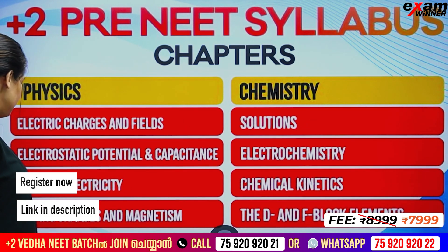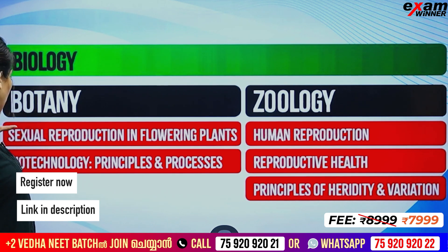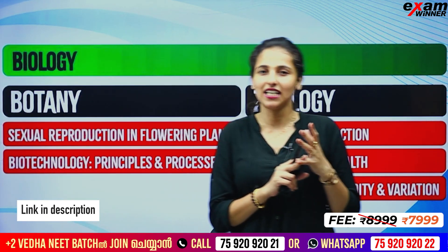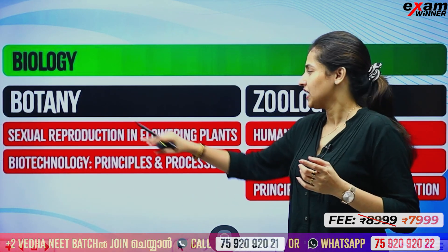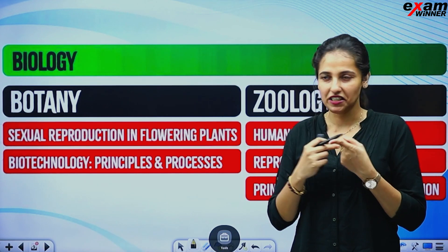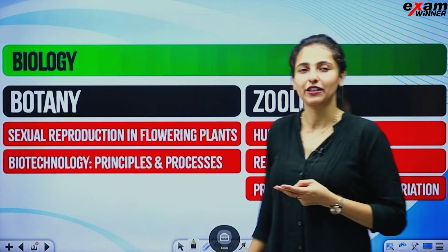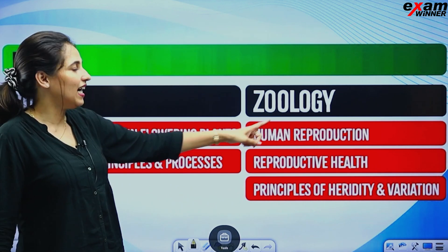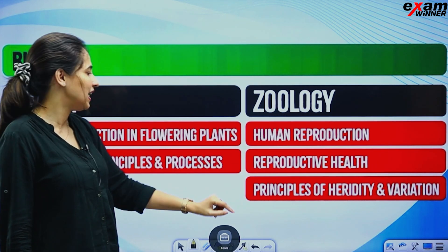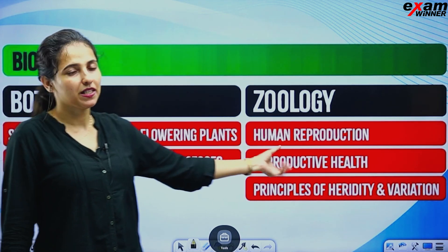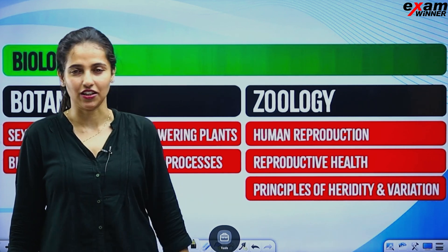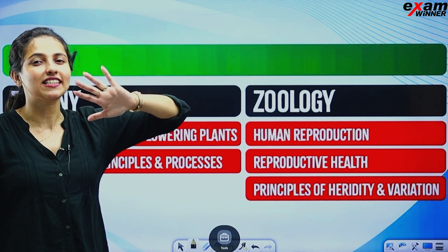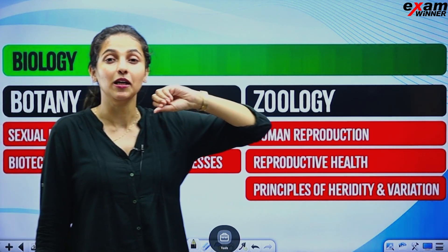In Biology, there are chapters from Botany and Zoology. In Botany: Sexual Reproduction in Flowering Plants and Biotechnology — Principles and Processes. In Zoology: Human Reproduction, Reproductive Health, and Principles of Inheritance and Variation. There are 5 chapters in biology.